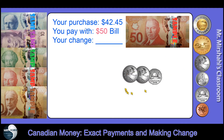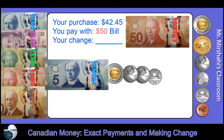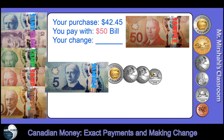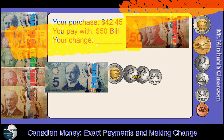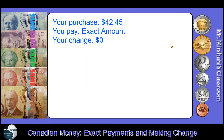Two more quarters make it a whole dollar — the next dollar is $43. From $43, I go to $45 with two $1 coins, and then to $50 with a $5 bill. Double-checking: 45 cents plus a nickel is $42.50, then $43, then $45, then $50. So your change from $50 for a $42.45 purchase is $7.55.